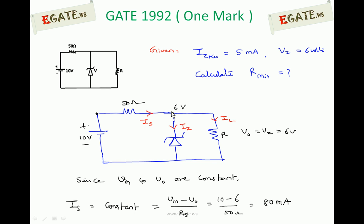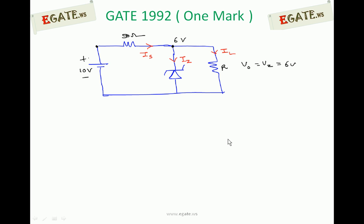Out of that, some current goes through the Zener diode, some current goes through the load resistor, and we need to calculate R minimum.